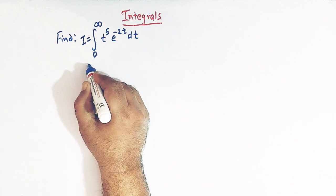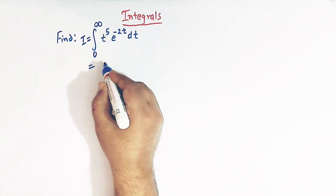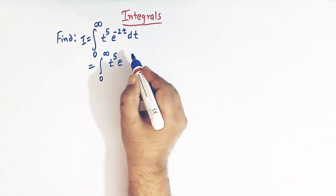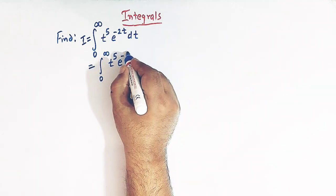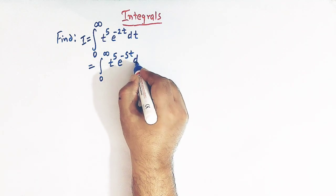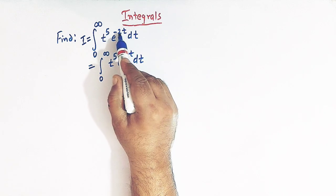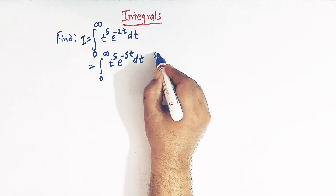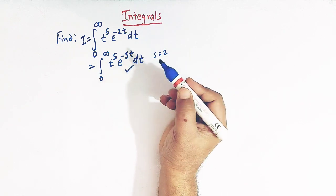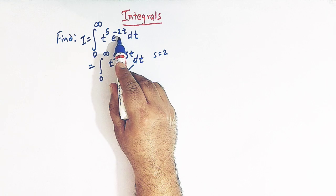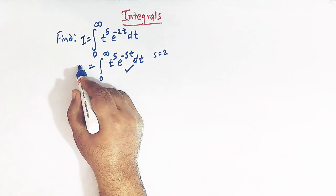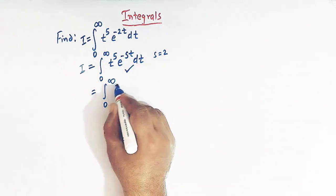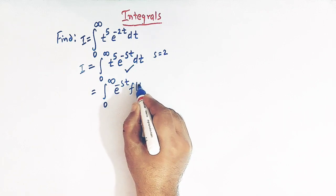Let us rewrite this integral as 0 to infinity of t raised to 5 and let us take here e raised to minus st. What we have done is we have replaced this 2 by s. In other words, if we take s equal to 2 in this integral, then we will get this one.